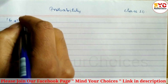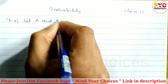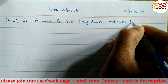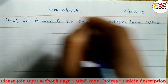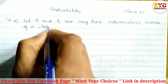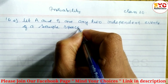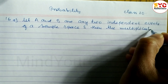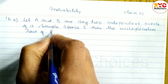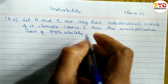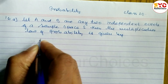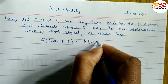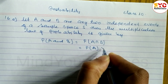For part A: Let A and B be any two independent events of a sample space S. Then the multiplication law of probability is given by: P(A and B) is equal to P(A) into P(B).